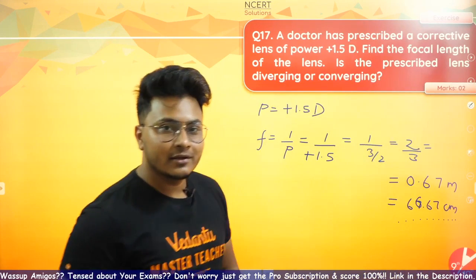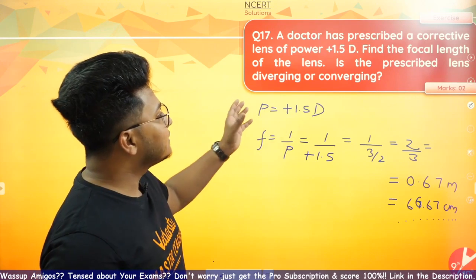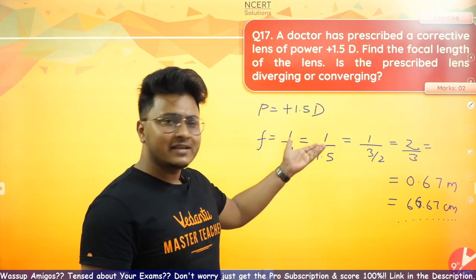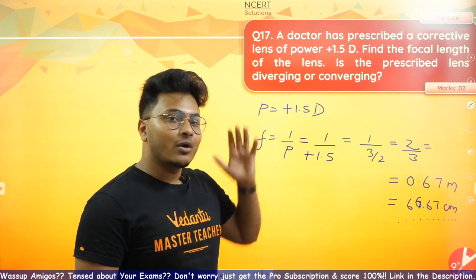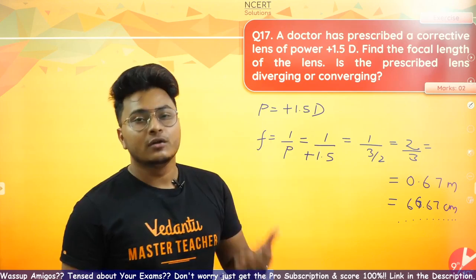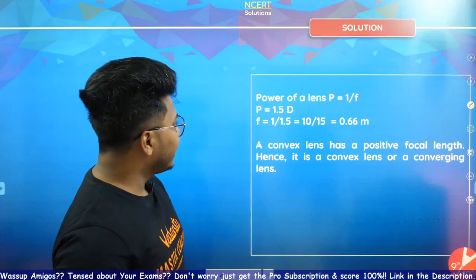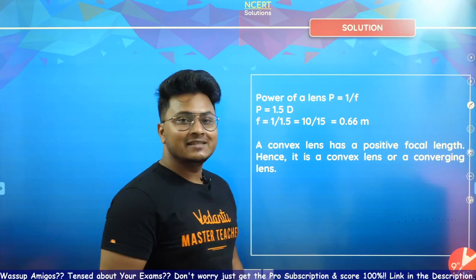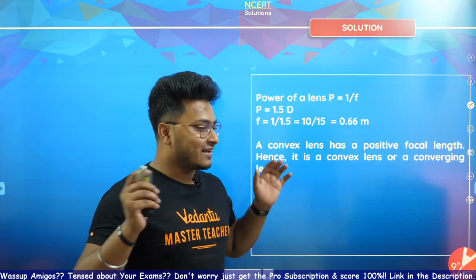So the prescribed lens is a converging lens — it's a convex lens because it has a positive focal length. Convex lens is a converging lens. The correct answer is 0.67 meters, or 66.67 centimeters.